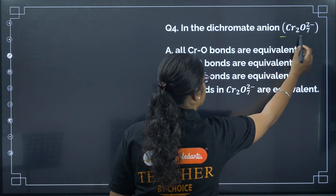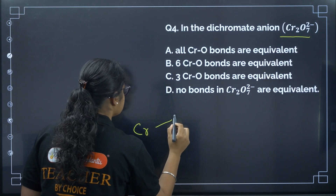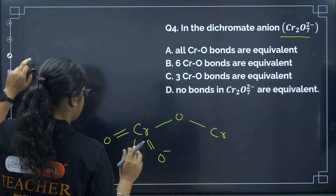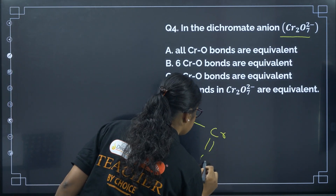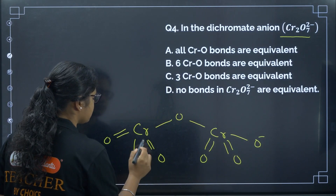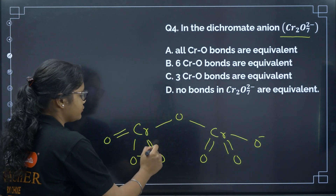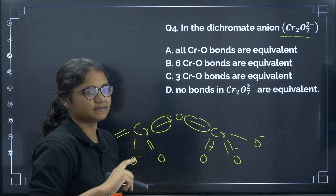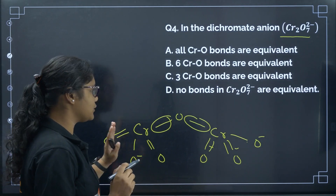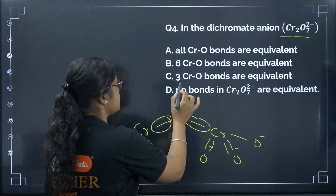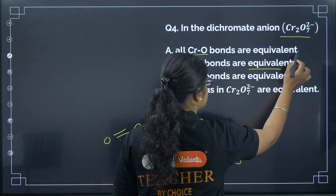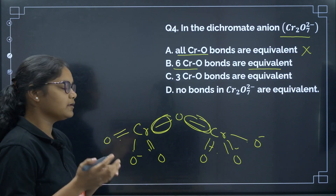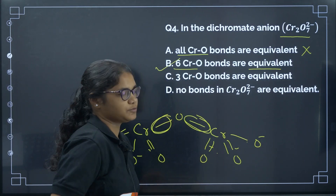Question 4: In the chromate dichromate ion Cr₂O₇²⁻, how many Cr–O bonds are equivalent? Looking at the structure, the oxygen bonds that are all in resonance — there are 1, 2, 3 here and 3 here, so total 6 Cr–O bonds are in resonance and equivalent. However, the bridging oxygen is not participating in resonance, so not all Cr–O bonds are equivalent. The correct answer is option B.